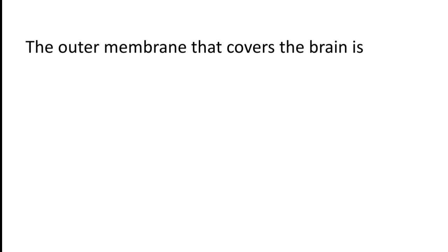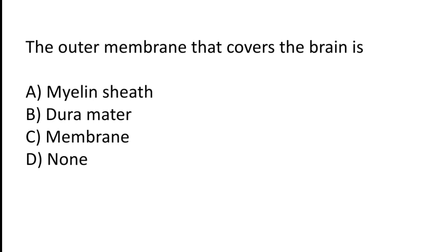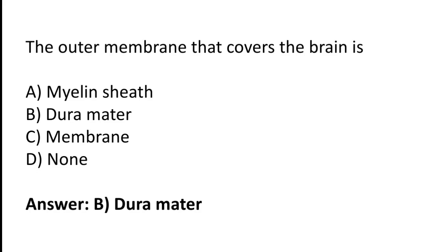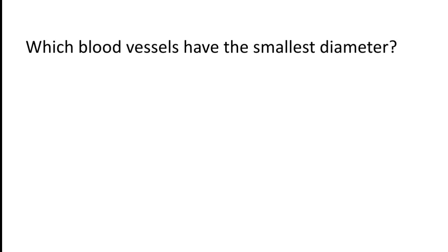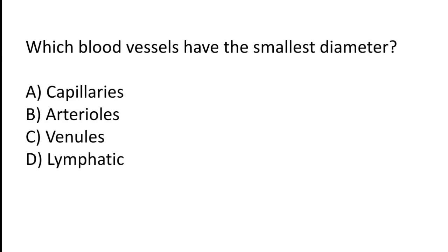The outer membrane that covers the brain is: myelin sheath, dura mater, membrane, or none? The correct answer is option B — the outer membrane that covers the brain is dura mater.